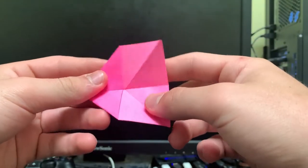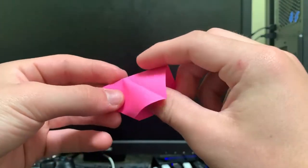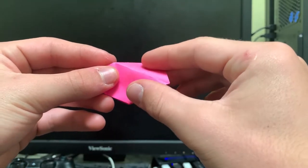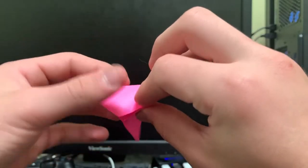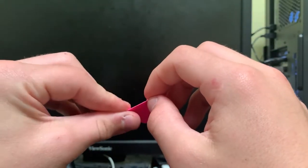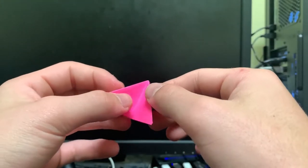Open that up, and this fold is kind of difficult, but you just reverse on that crease you just made. On both sides, if you do that, it makes these two flaps in the back, and that's it.